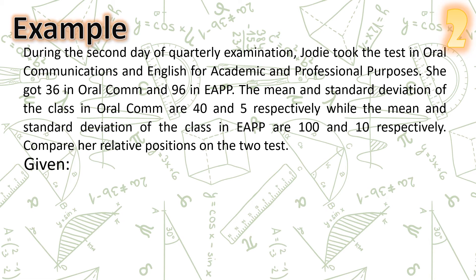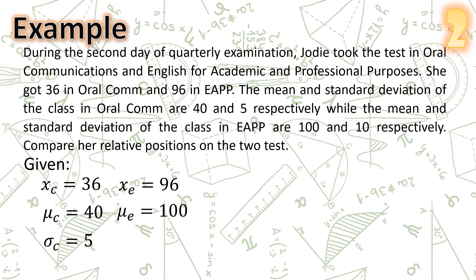Given information: let x_z = 36 be Jody's raw score in oral communication; mu_z = 40 be the class mean; sigma_z = 5 be the standard deviation. For EAPP: x_e = 96 be Jody's raw score; mu_e = 100 be the class mean; sigma_e = 10 be the standard deviation.